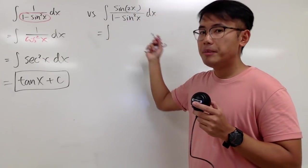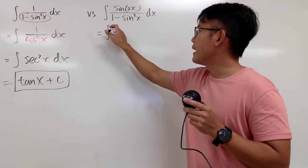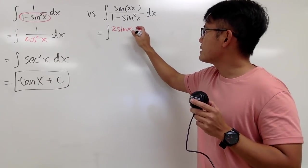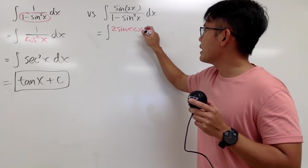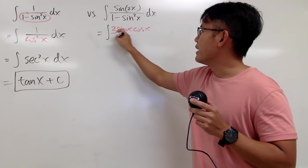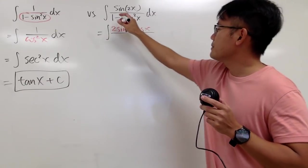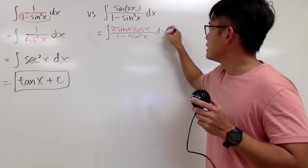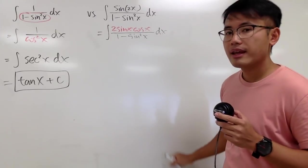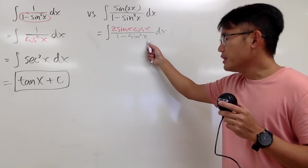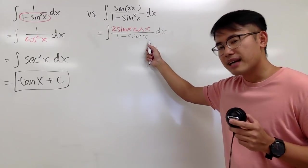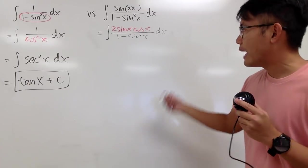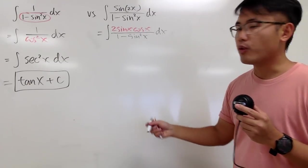On the top, by the double angle identity, we get 2 times sine x times cosine x. And then this is over 1 minus sine squared x, dx. From here, you have two ways to approach this integral, and I will show you both ways.